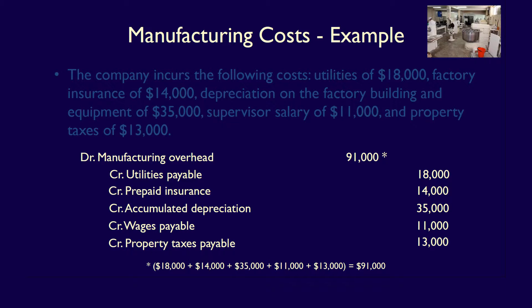Manufacturing overhead is a temporary asset account on the balance sheet which, by the end of the year, will equal zero. Note also that had we paid these amounts in cash, our entry would have reflected cash instead of payable accounts. Be sure to read the question carefully to know whether to use payable or cash. Even when cash is paid, prepaid insurance and accumulated depreciation are always used.